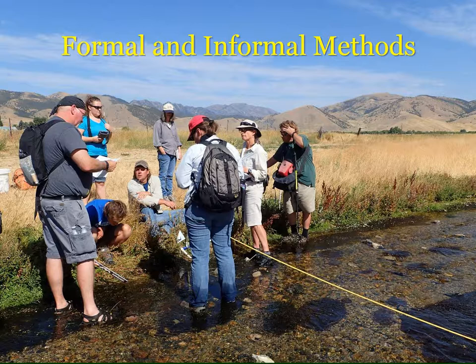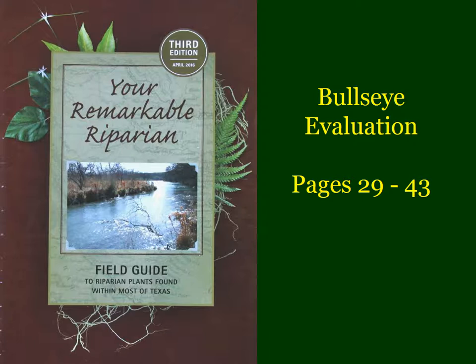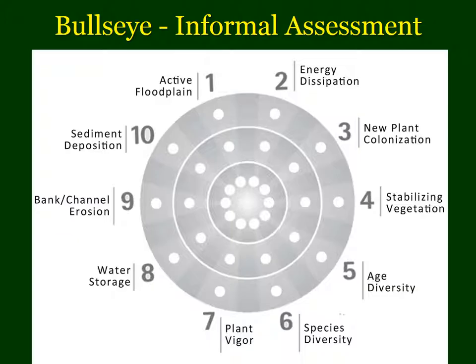There are both formal and informal methods of assessment and monitoring and we'll talk about a few of the different methods that are used. You've already been exposed to the bullseye evaluation, which is found in the Remarkable Riparian Field Guide beginning on page 29. This is an informal assessment looking at 10 different factors in riparian areas.